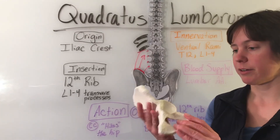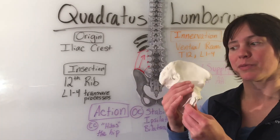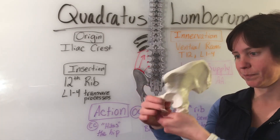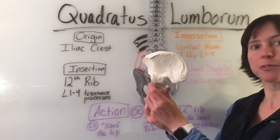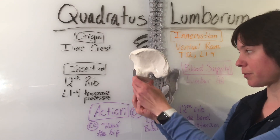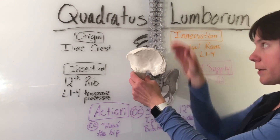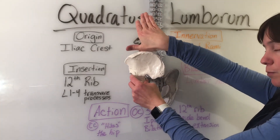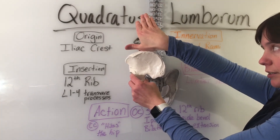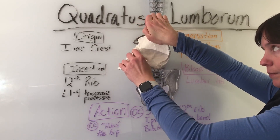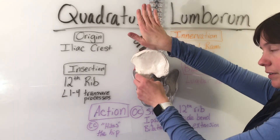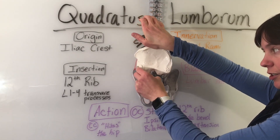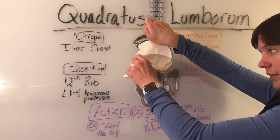Here we have our left pelvis looking at it from a posterior view. If the quadratus lumborum contracts, it will hike the hip like so — contraction hiking the hip.